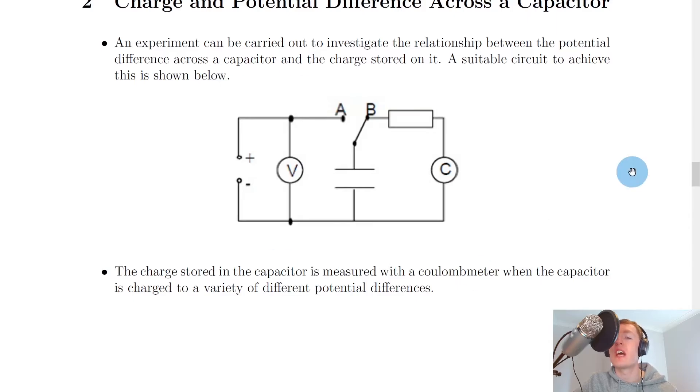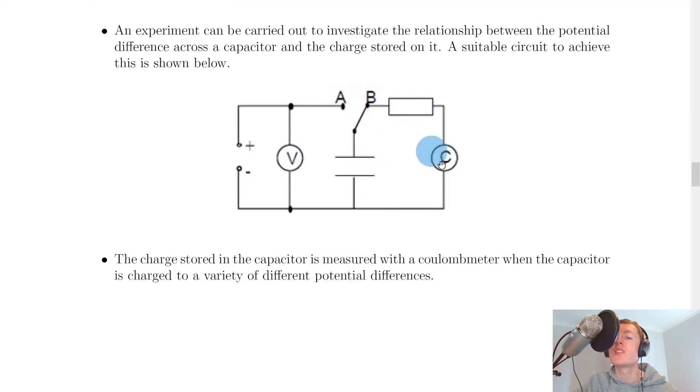So here's a circuit diagram you could set up in order to investigate this relationship. So you've got a DC source over here with positive and negative terminals, you've got a voltmeter in parallel with a capacitor here, and you've also got a switch which can move between parts A and B. We've then got a resistor and a coulomb meter in series with each other, where the coulomb meter can measure the charge on the capacitor.